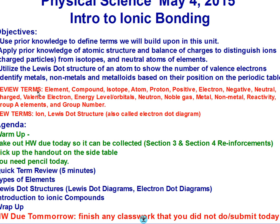Some review terms that are going to come up in this section today are: element, compound, isotope, atom, proton, positive, electron, negative, neutral, charged, valence electron, energy level or orbitals, neutron, noble gas, metal, nonmetal, reactivity, group A elements, and group number. These are all review terms. Some of them we haven't used a whole lot, like orbitals — we haven't seen that probably since February. Our new terms today will be ion and Lewis dot structure.